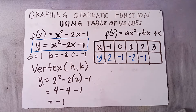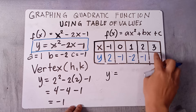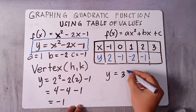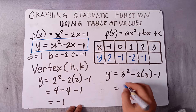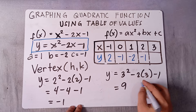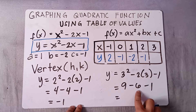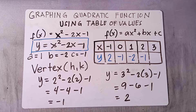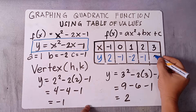Last, if x = 3: y = 3² - 2(3) - 1 = 9 - 6 - 1 = 3 - 1 = positive 2. So if our x is 3, our y is positive 2.